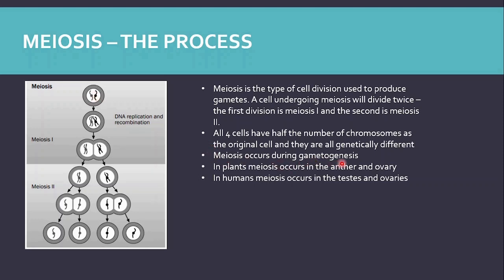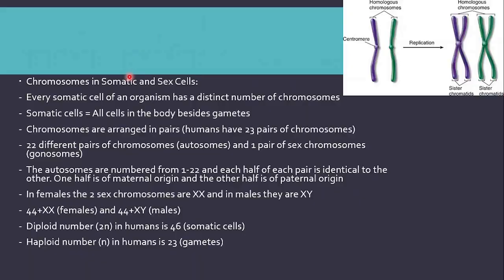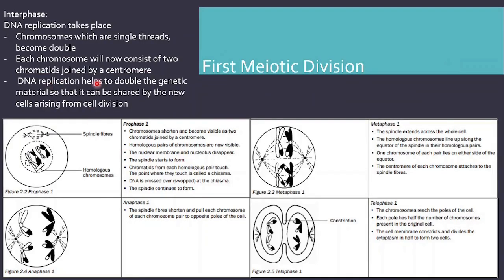Meiosis occurs during gametogenesis — in plants it occurs in the anther and the ovary, and in humans meiosis occurs in the testes and the ovaries. The first meiotic division starts with interphase, where DNA replication takes place. The chromosomes, which were single threads, are now double threads — each chromosome now consists of two chromatids joined by a centromere. DNA replication doubles the genetic material so that it can be shared by the new cells arising from cell division.